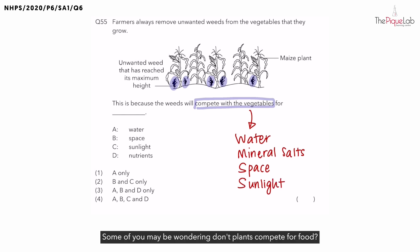Some of you may be wondering, don't plants compete for food? Let's think about this. Plants can make their own food. So do they need to compete for food? No. As long as they receive enough water and sunlight, they are able to make their own food. So they do not compete for food.